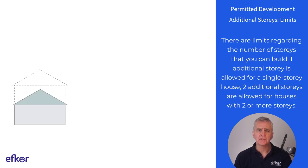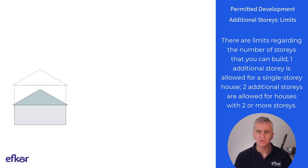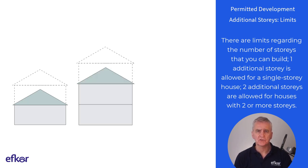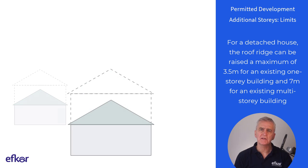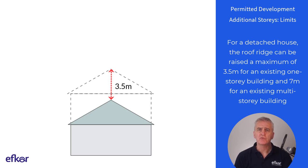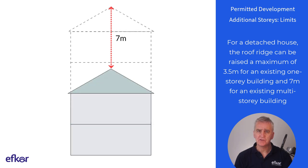Turning to limits. There are limits regarding the number of stories that you can build. One additional story is allowed for a single story house, and two additional stories are allowed for houses with two or more stories. For a detached house, the roof ridge can be raised a maximum of 3.5 meters for an existing one-story building, and seven meters for an existing multi-story building.